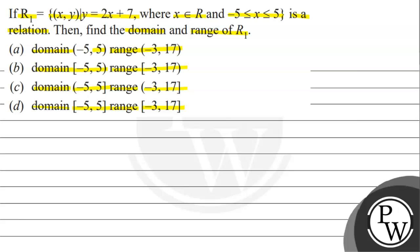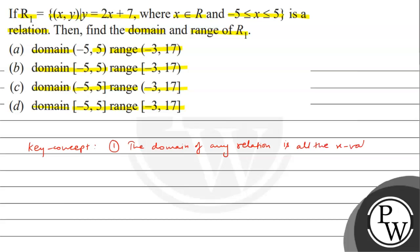This question has r1 as a relation: (x, y) such that y is equal to 2x plus 7, and x varies from minus 5 to 5. We have to find the domain and range of r1. The domain of any relation is all the x values, or inputs of the relation.